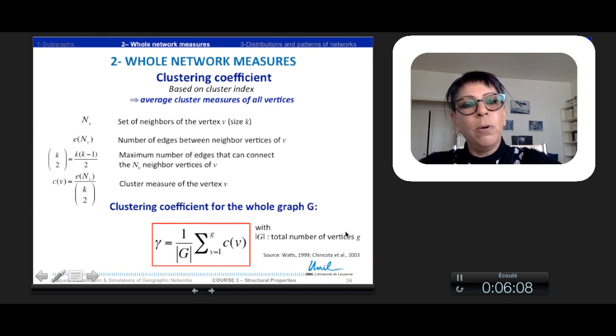Applied to the whole graph, we can calculate now the clustering coefficient, which is based on this cluster index. So it is the average cluster measure of all vertices. We always have the same definitions. And we make the summary of all the local clustering coefficient of the vertex divided by the total number of vertices.